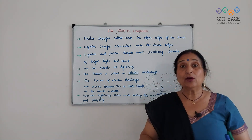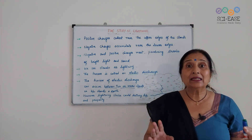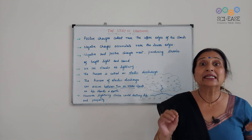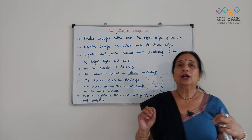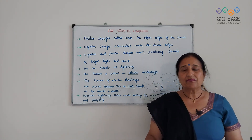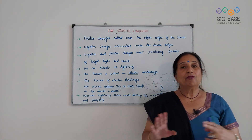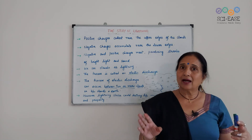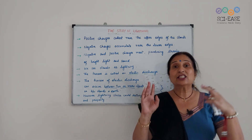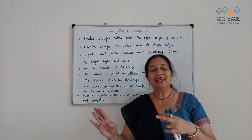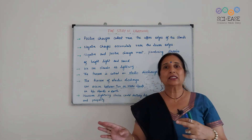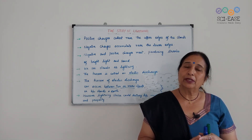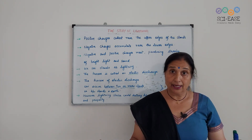Agar hamare oopar lightning — kisike oopar bhi lightning gir jati hai — toh life threatening hai. Vohan peh bohut dar hai ke woh insaan bachega nahi. Agar kisiki property ya building ke oopar bhi gir jati hai, toh woh bhi destroy ho sakta hai.